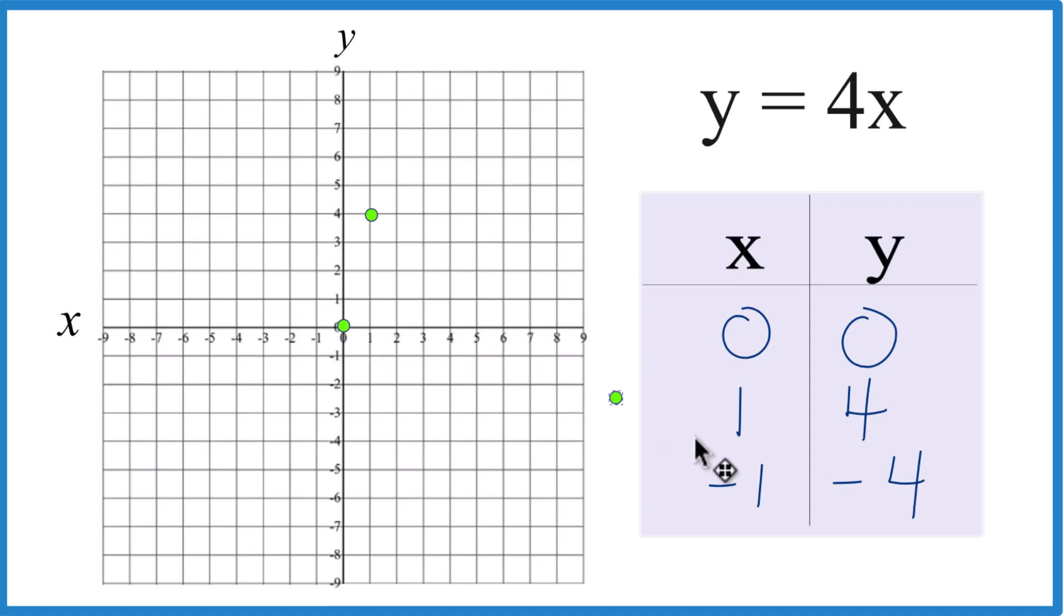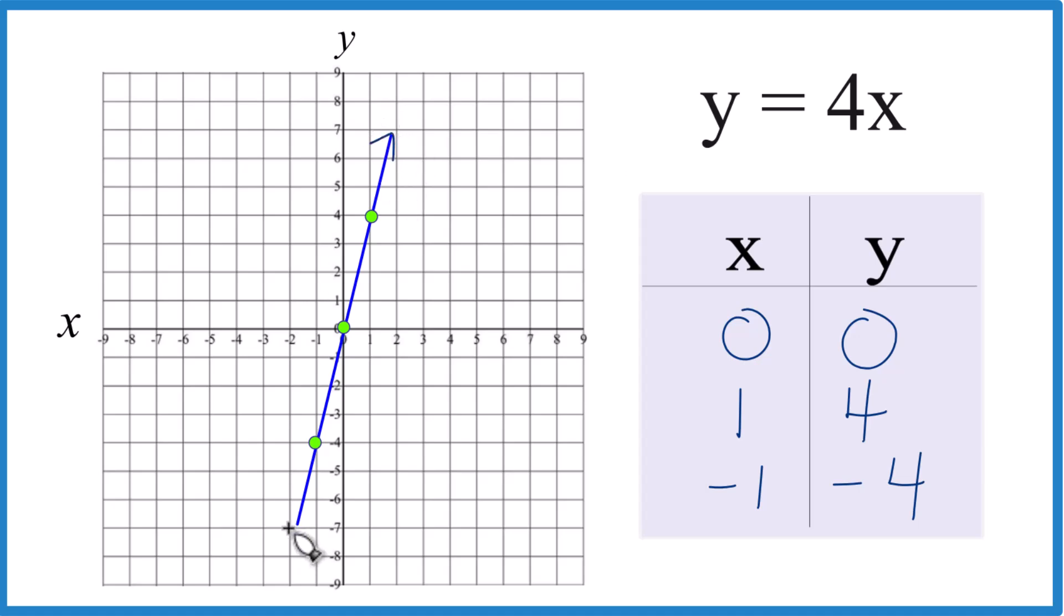I like to do three in case I made a mistake. Negative 1x, negative 4y. You can see our line there for y equals 4x. Let's put a line through that. Then we'll put arrows, show that it goes to infinity. And that is the line for the equation y equals 4x.